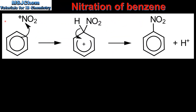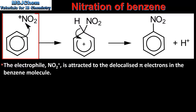Next we look at the mechanism of the reaction in more detail. The electrophile, which is the nitronium ion, is attracted to the delocalized pi electrons in the benzene molecule. This curly arrow shows a movement of a pair of electrons from the benzene molecule to the nitrogen atom of the nitronium ion. As we will see next, this pair of electrons is used to form a bond with the electrophile.